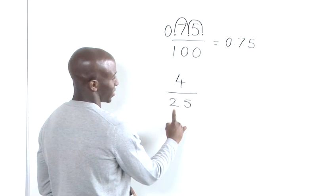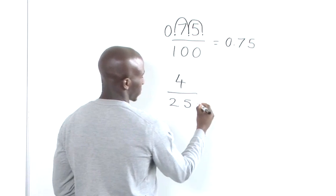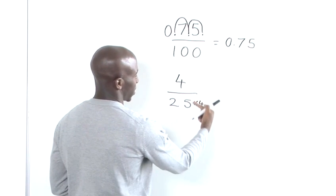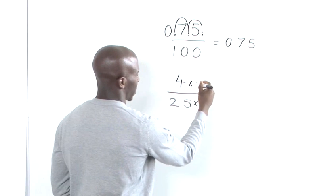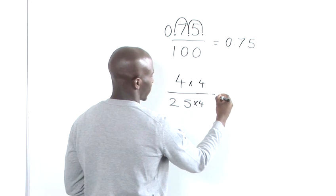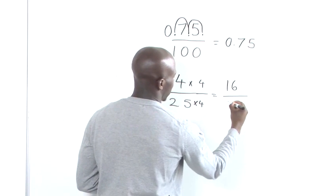So, the easiest way to get this to be 100 is to multiply it by 4. And again, just to preserve the fraction's weight, we would need to multiply the top also by 4. So, we have 16 divided by 100.